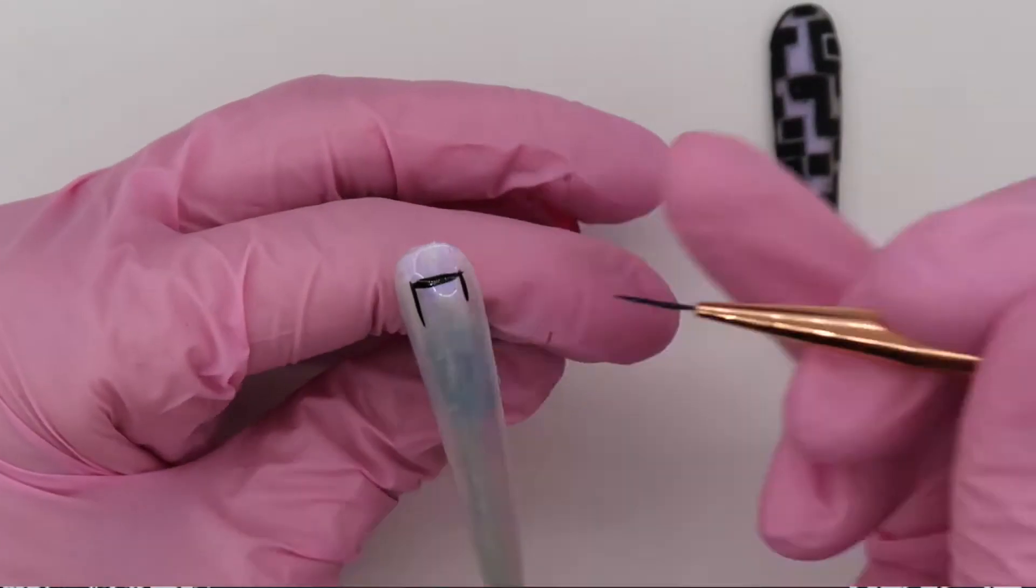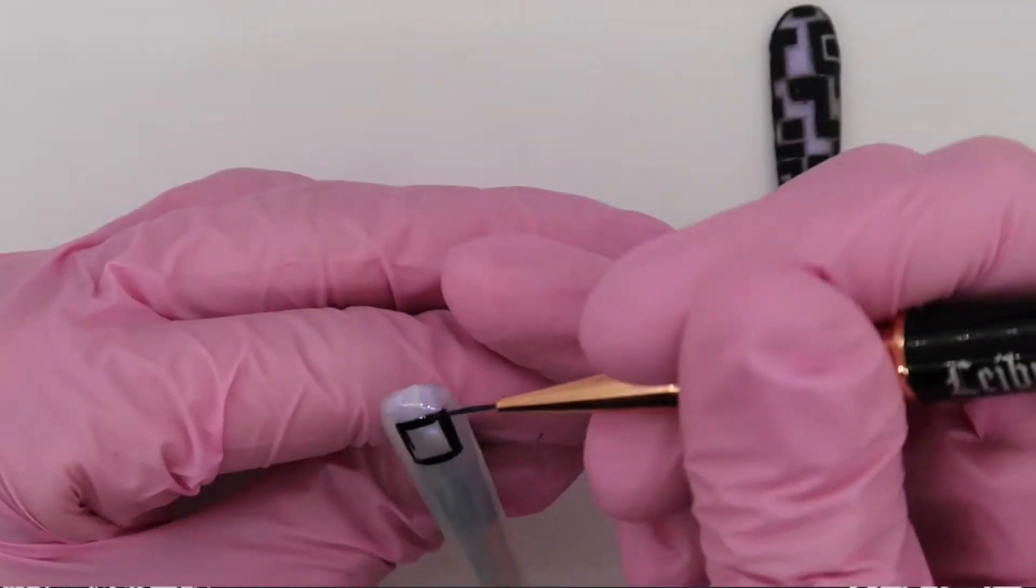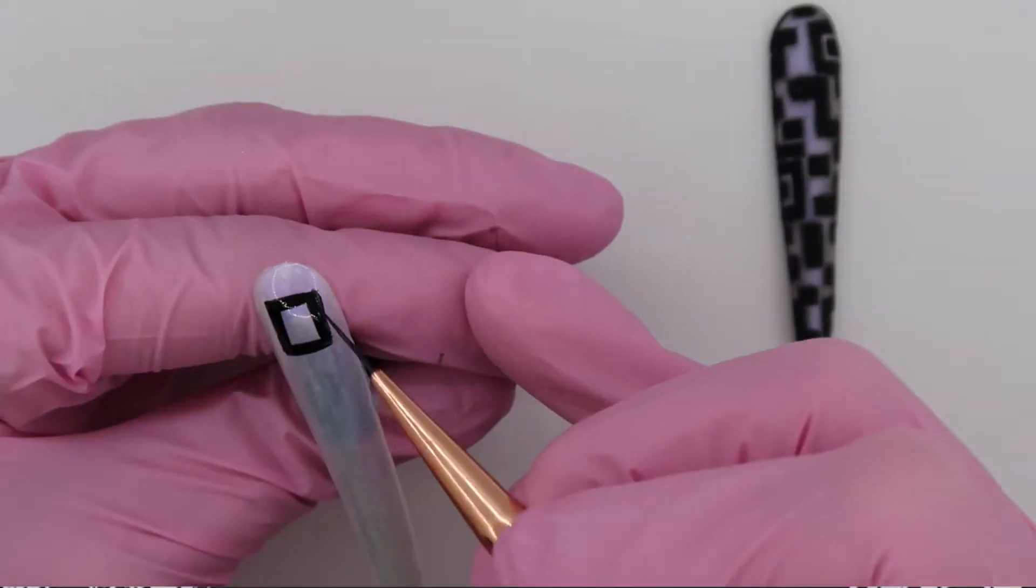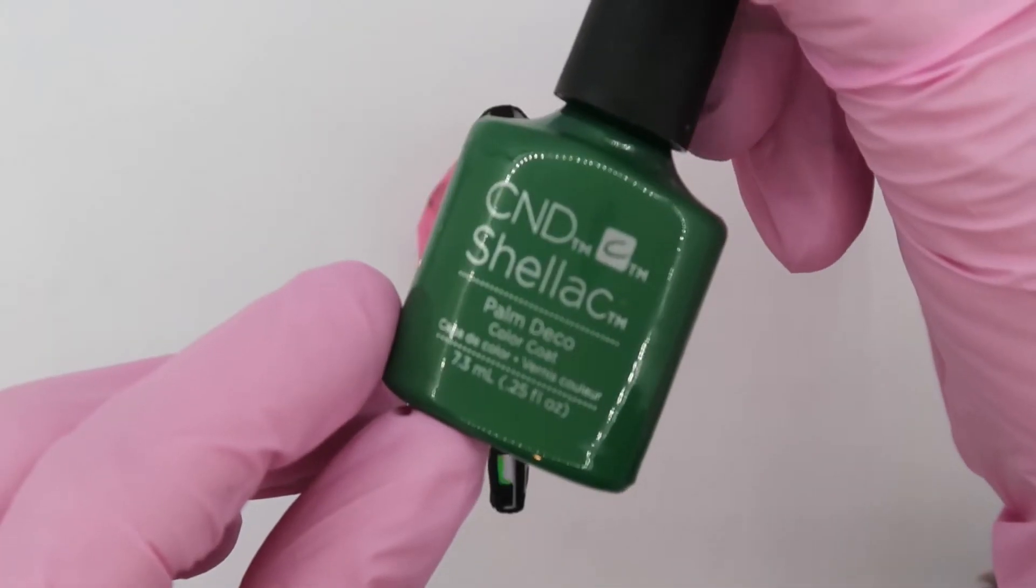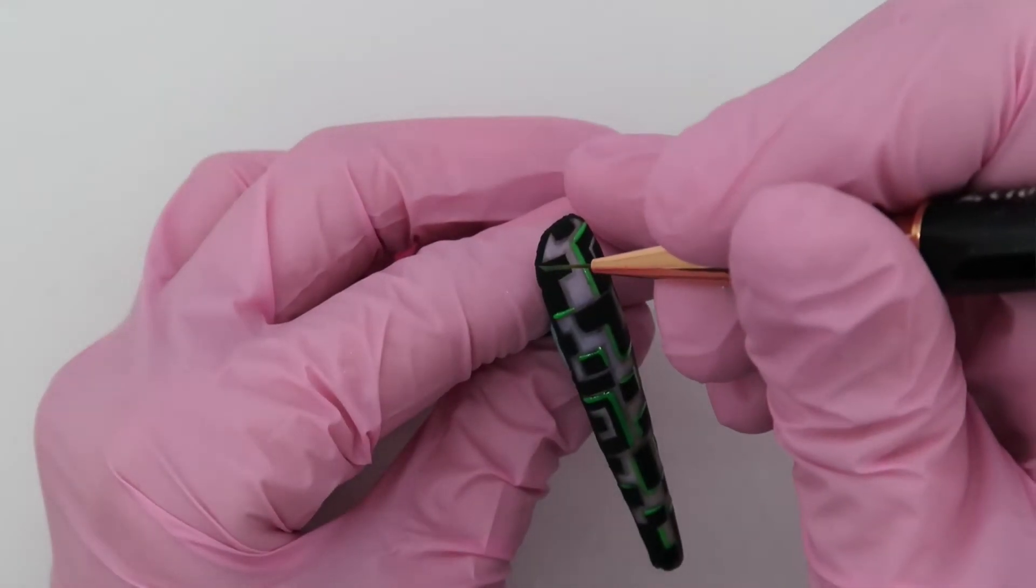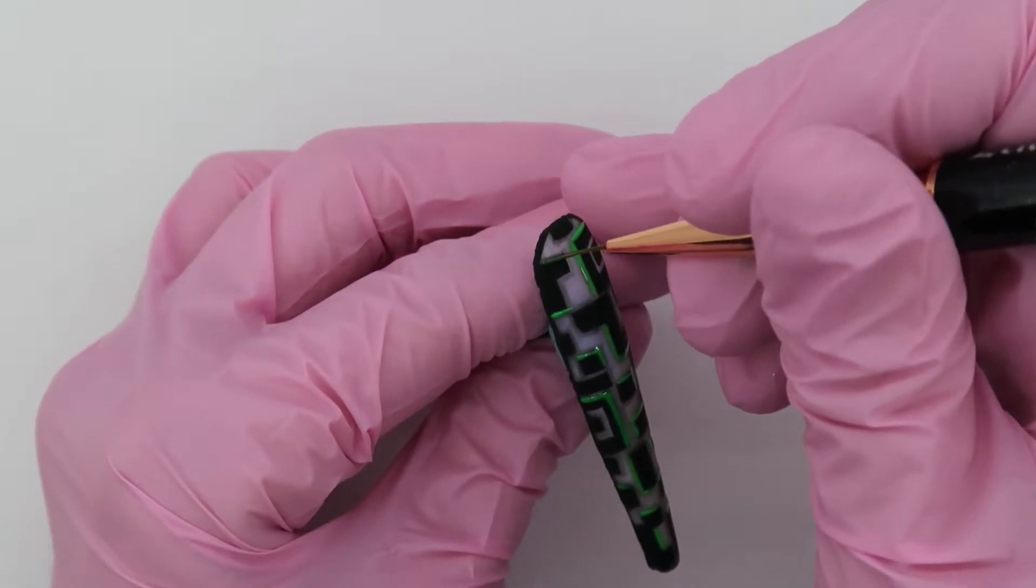The QR code nails were hand painted so that the design could be customized to the nail length and size. To enhance the green elements in the QR barcode, use Palm Deco.